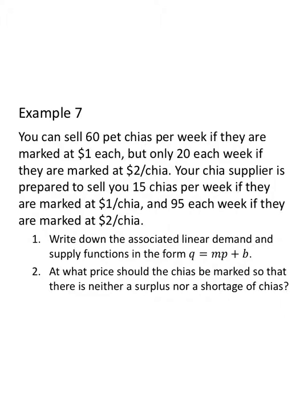Example seven. You can sell 60 pet Chias per week if they're marked at $1 each, but only 20 each week if they're marked at $2 per Chia. Your Chia supplier is prepared to sell you 15 Chias per week if they're marked at $1 per Chia and 95 each week if they're marked at $2 per Chia. Notice I pick up speed because as I'm reading through this, that's a whole bunch of what? I get down to the questions. Write down the associated linear demand and supply functions in the form Q equals MP plus B. So all this nonsense in the paragraph at the top, that's setting me up, giving me the information for my demand and supply functions. And of course, once I have supply and demand functions, neither a surplus nor a shortage, I want to find equilibrium.